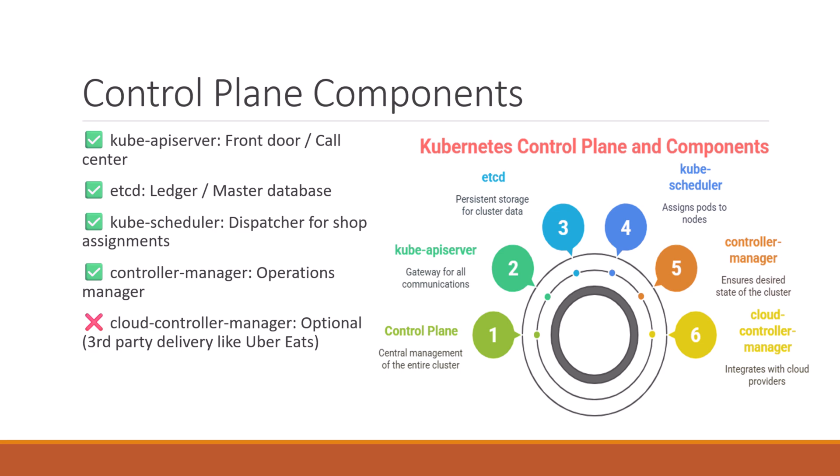The kube API server is like a call center — all requests go through it. Whether a customer orders a pizza or a staff member reports an update, everything passes through here.